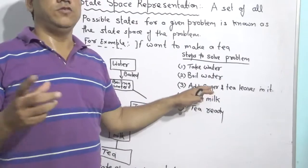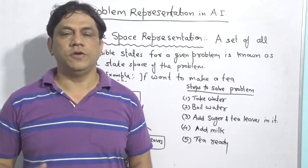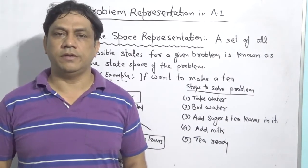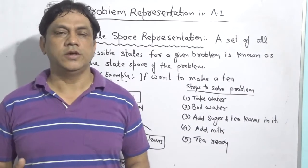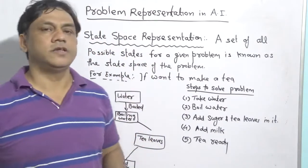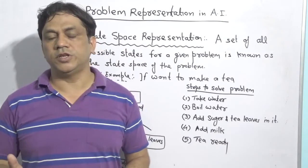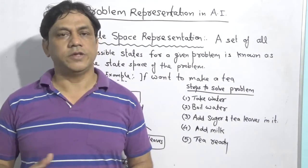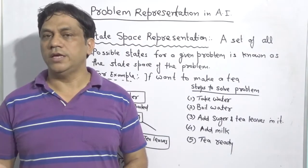In coming videos we will see different problems such as the water jug problem, missionaries and cannibals problem, 8-puzzle, map coloring problem, and other AI problems. In all these videos we will use state space representation, which is why I made this video. If you understand state space representation, you will not find any difficulty with those problems. I hope you understood the state space representation way of AI technique.